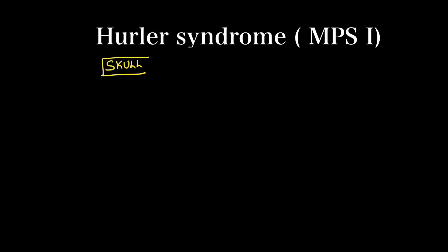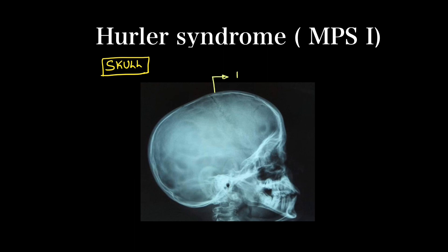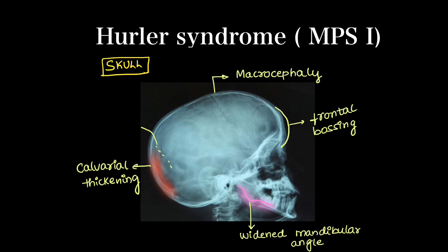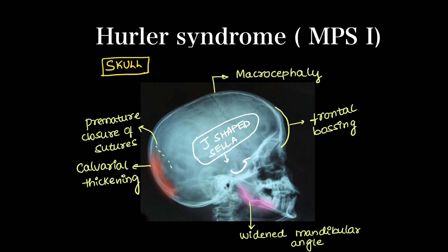We need to get a skeletal survey in such cases. In the skull X-ray, we see macrocephaly, frontal bossing, and calvarial thickening. There will be widening of the mandibular angle and there can be premature closure of sutures. The most important feature to notice is the J-shaped sella, which is pathognomonic for Hurler's.